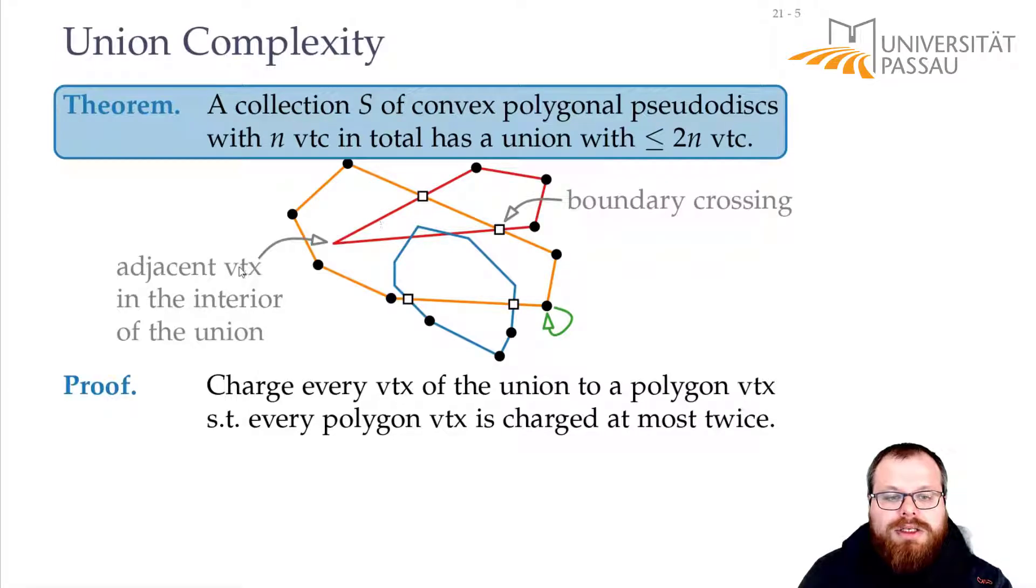Because it cannot cross through the whole thing, because they are pseudodisks. So we have one interior vertex that we don't count for the boundary of the whole thing, that we can charge these two boundary crossings to.